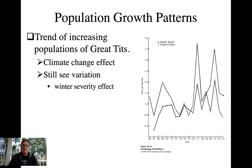One of the species that's been studied in great detail for a long time are great tits in Europe. In one study looking at two different locations, we see a similar pattern of quite a bit of fluctuation. On the x-axis we have year, on the y-axis we have number of pairs per hectare, and there is considerable variation — some high density years and then oftentimes the next year is a considerable drop in population size.